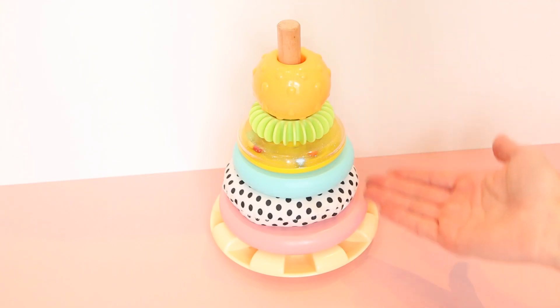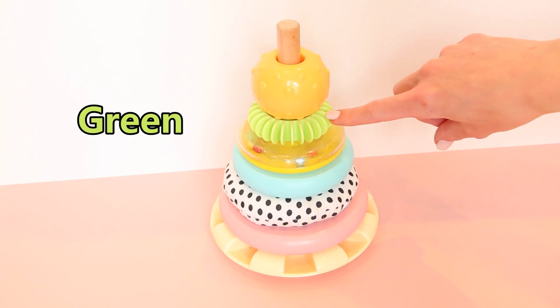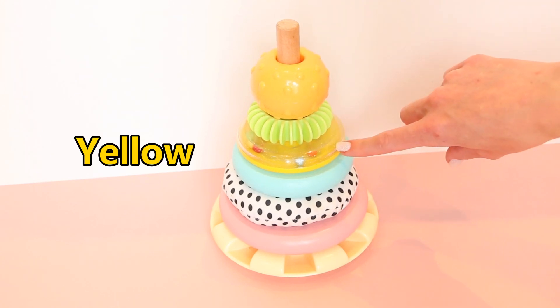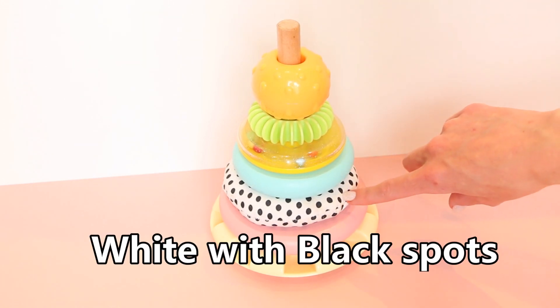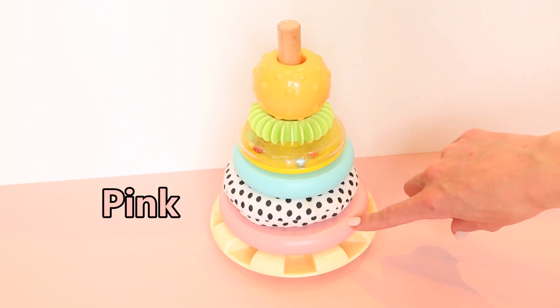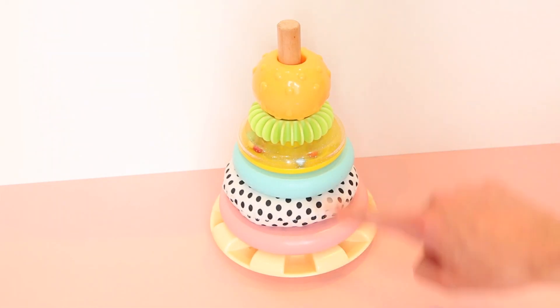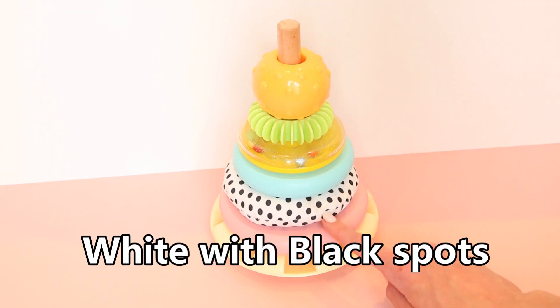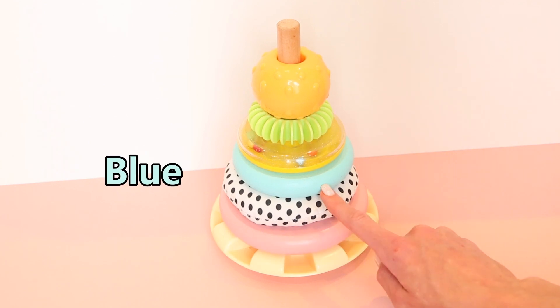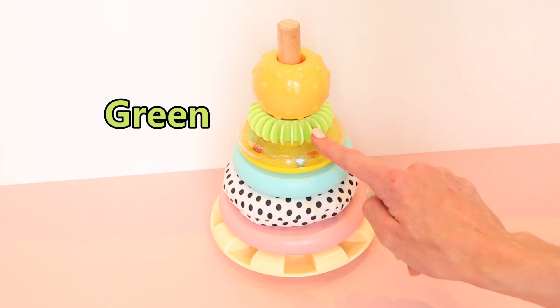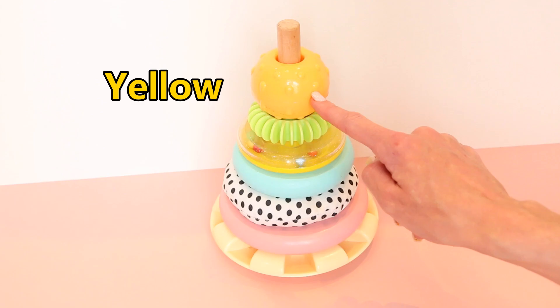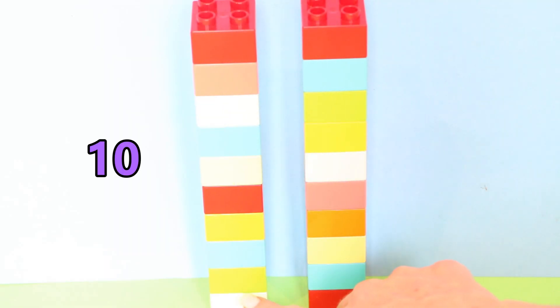What colors are they all? Yellow, green, yellow, blue, white with black spots, pink, yellow. Let's do it the other way from bottom to top. Yellow, pink, white with black spots, blue, yellow, green, yellow. Here we have ten Lego bricks...